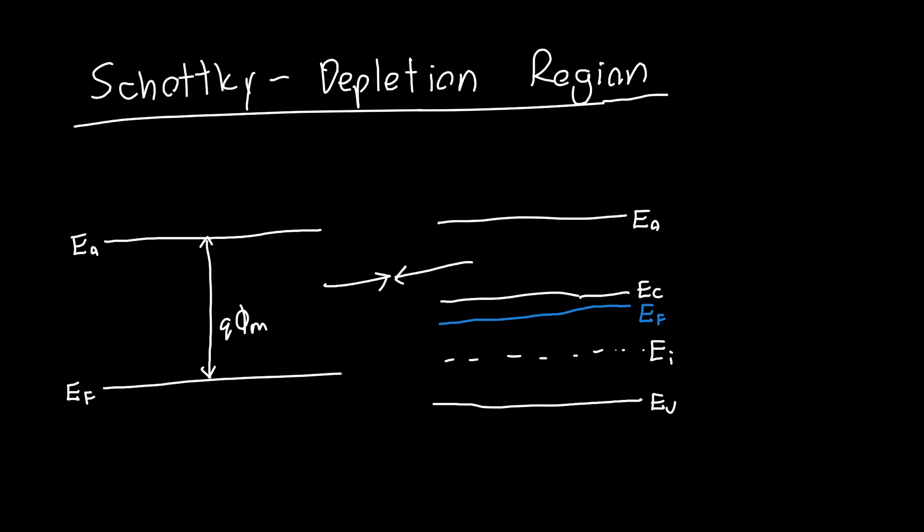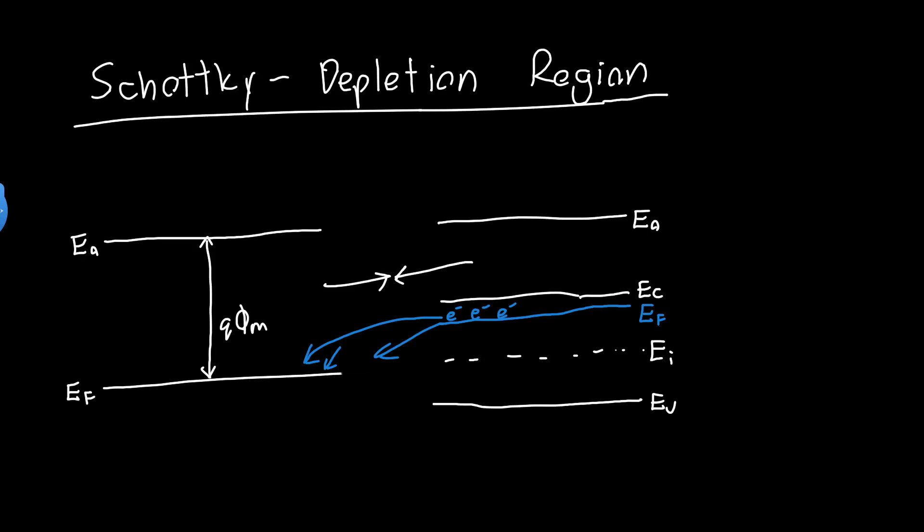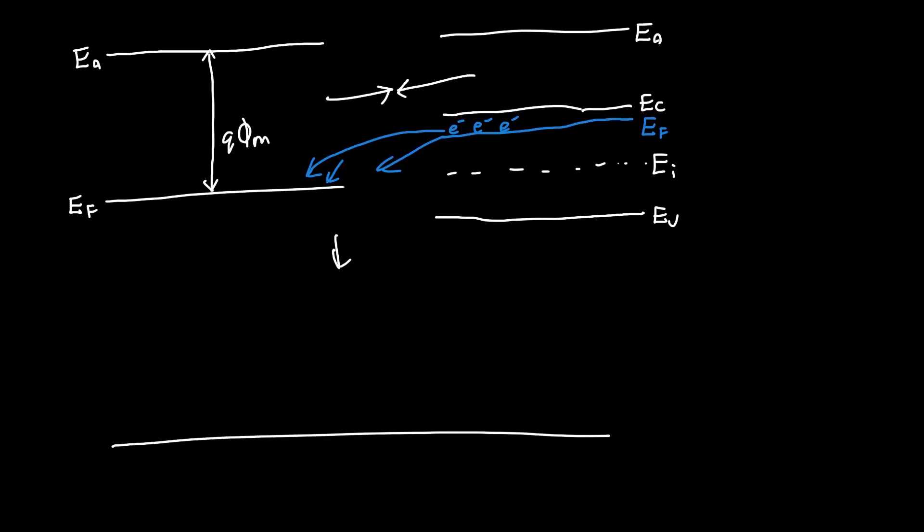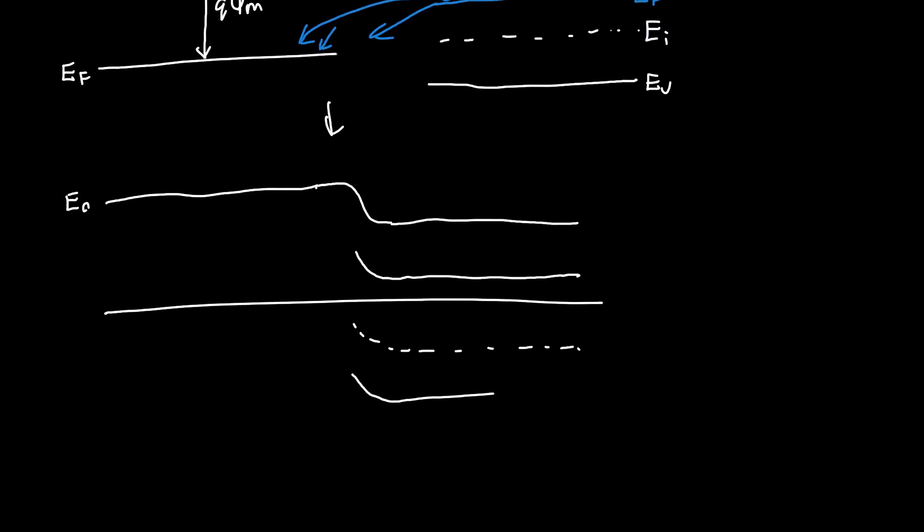This makes this an n-type semiconductor, and we've got our valence band and maybe our intrinsic Fermi energy as well. When we bring these two in contact, we've got a bunch of high-energy electrons that will tend to diffuse into the metal until the Fermi energies are equal everywhere. Once that happens, the band diagram will look something like this. Our vacuum level bends down, as does our conduction band, our intrinsic Fermi energy, and our valence band.